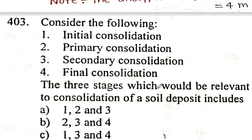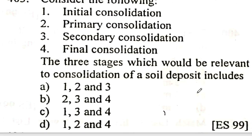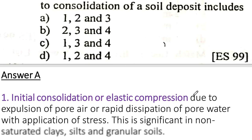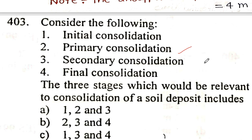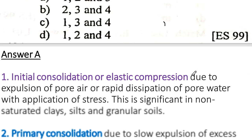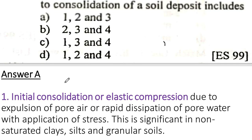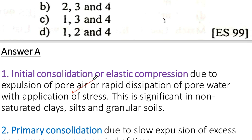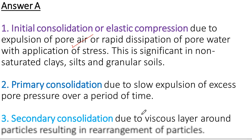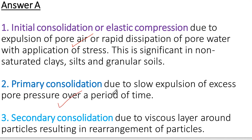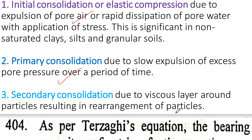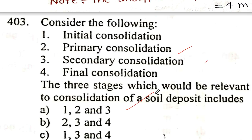Next question: consider the following statements regarding consolidation of soil deposits — initial consolidation, primary consolidation, and secondary consolidation. Initial consolidation is elastic settlement due to expulsion of pore air. Primary consolidation is due to expulsion of pore water pressure. Secondary consolidation is due to plastic rearrangement. So the correct order is 1, 2, and 3.